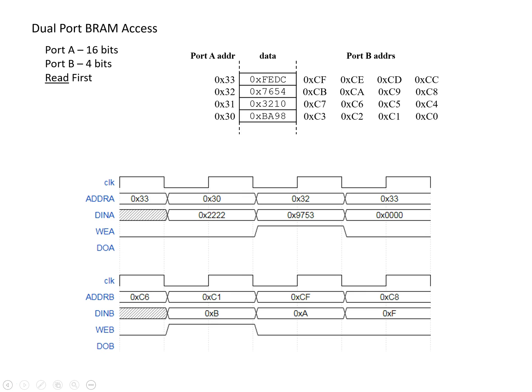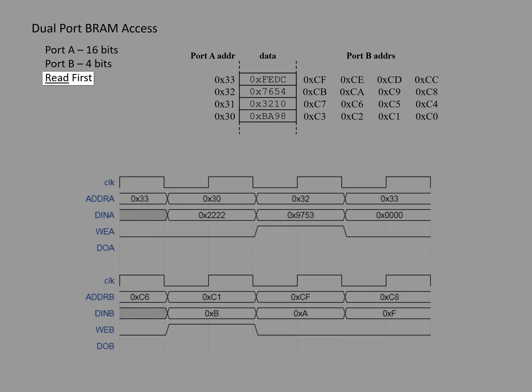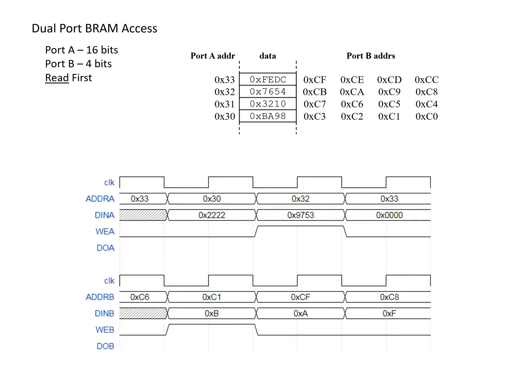We're now going to look at the same sequence of addresses assuming that the BRAM is in read-first mode. While this won't change a lot, it will change a few things. On the first rising edge of the clock, we weren't writing anything, so we read the same value: address 33 still has the value of FEDC. Similarly for port B, we're looking at address C6, which has the value of 0x2.